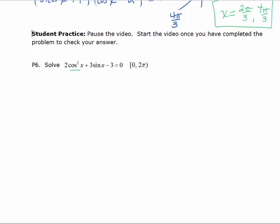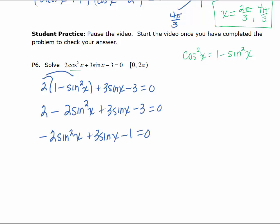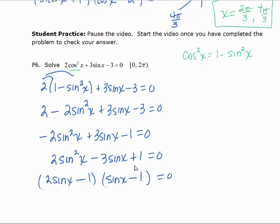I'm going to start by making a trig substitution for cosine squared. Cosine squared equals 1 minus sine squared, so I'll make that substitution. I'll distribute, simplify and rearrange, and to make it easier to factor, I'll multiply both sides by negative 1, basically just changing the sign of every term. The next step is to factor and then solve. Factoring the trinomial gives us 2 sine x minus 1 times sine x minus 1.